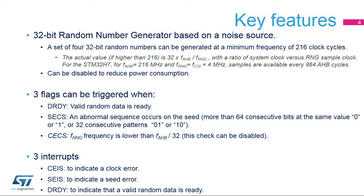A clock error current status flag is set if the RNG clock is less than HCLK clock divided by 32. This check can be disabled, especially when the RNG clock is initialized low for maximum entropy. An interrupt source can also be enabled to indicate an abnormal seed sequence or frequency error.